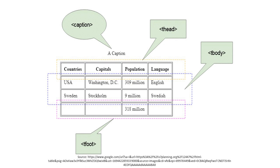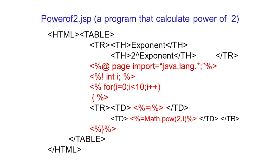Again, you can see that first of all we write the caption, then the table head — also called T-head — which is the first line. Then the table body, and at last the table footer. So we have to focus on these two: table heading and table body. Now see this program where we have defined table heading and table body.